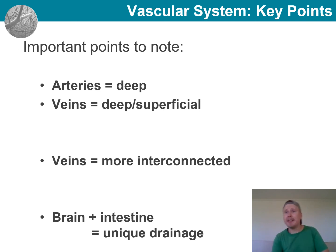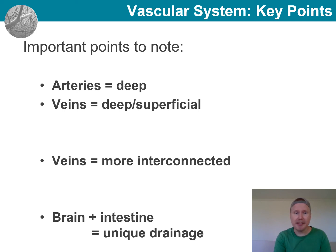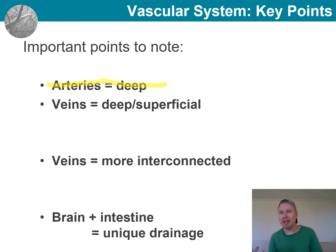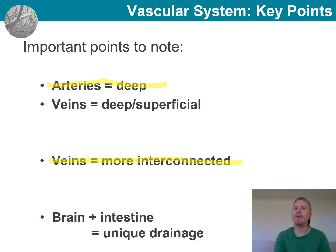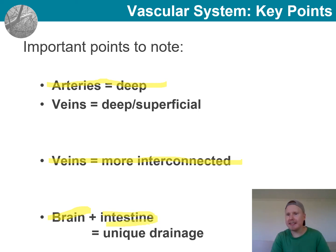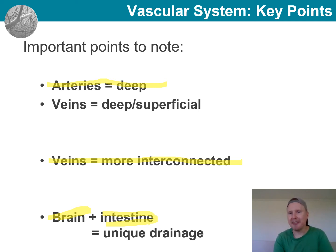As a rule of thumb, arteries run deep in the body, which protects them from being injured or cut, preventing rapid loss of large volumes of blood. Veins have adaptations with many alternative routes, useful if there is a blockage somewhere. Finally, the brain and intestine have unique venous drainage arrangements — notably, nutrient-rich blood from the intestines goes first to the liver so that energy can be stored.